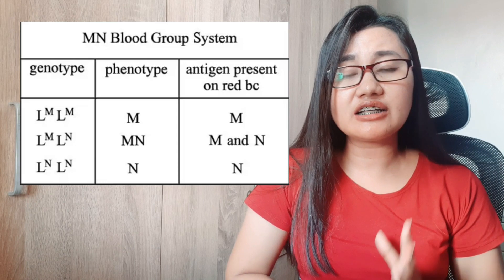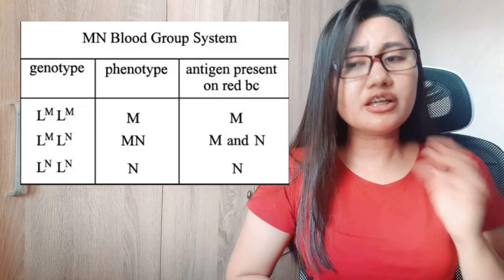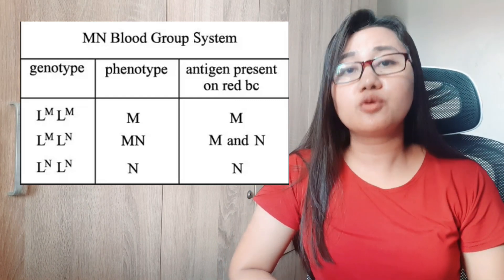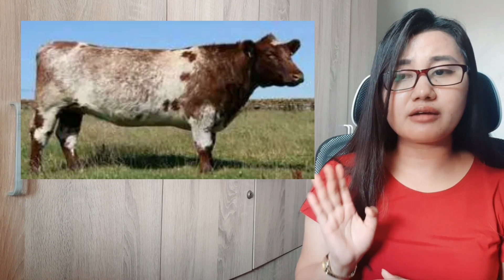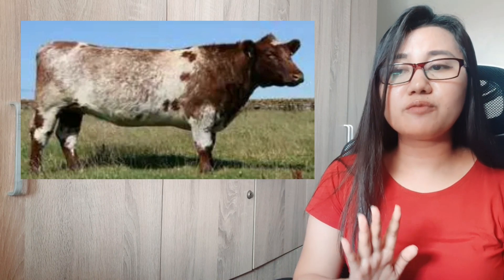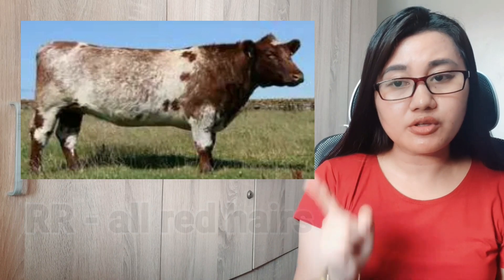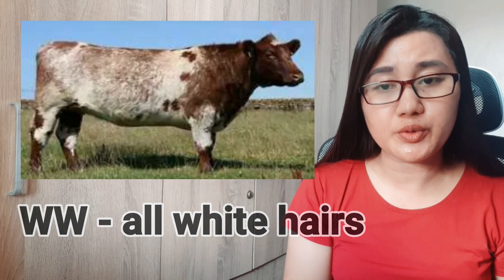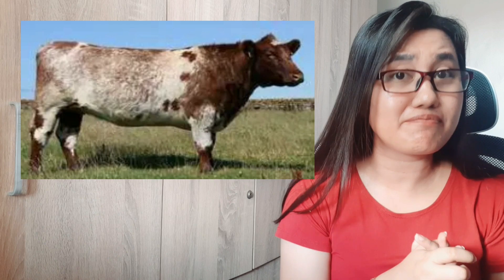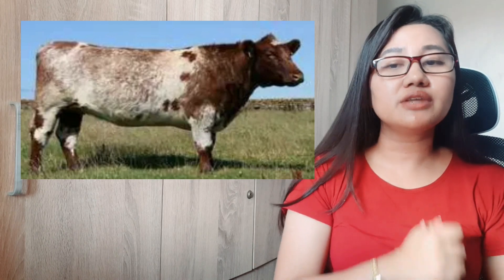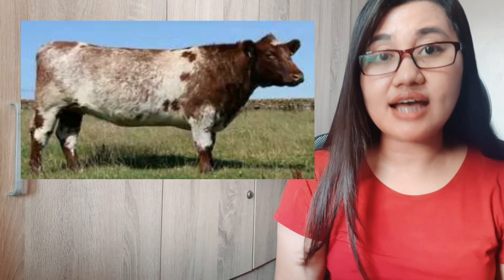Just like in incomplete dominance, the genotypic ratio in codominance also becomes the phenotypic ratio. Another good example of codominance is Roan coloring in cattle. Notice this cattle — it has parts that are white and parts that are purely red. The homozygous RR genotype gives all red hairs; the WW genotype gives all white hairs. But if the genotype is RW, it means red and white hairs together — unlike in incomplete dominance where combining would produce a pink color. Have you ever seen a pink cattle? So these cattle and cats are considered examples of codominance.